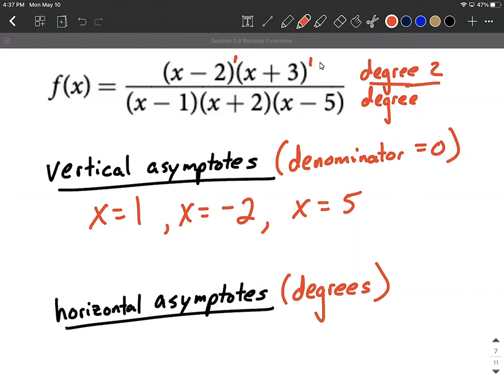For our denominator, you may notice we have three factors. If we multiply that all out, we'd get degree three. In this comparison, our denominator is larger than the numerator. Therefore, at y equals zero, we're going to have a horizontal asymptote.